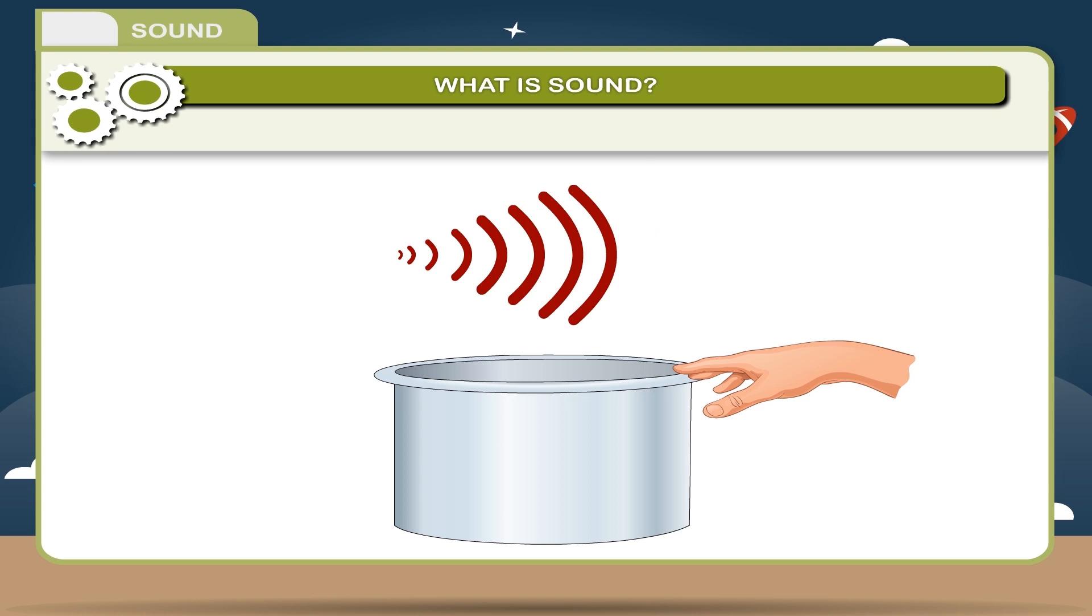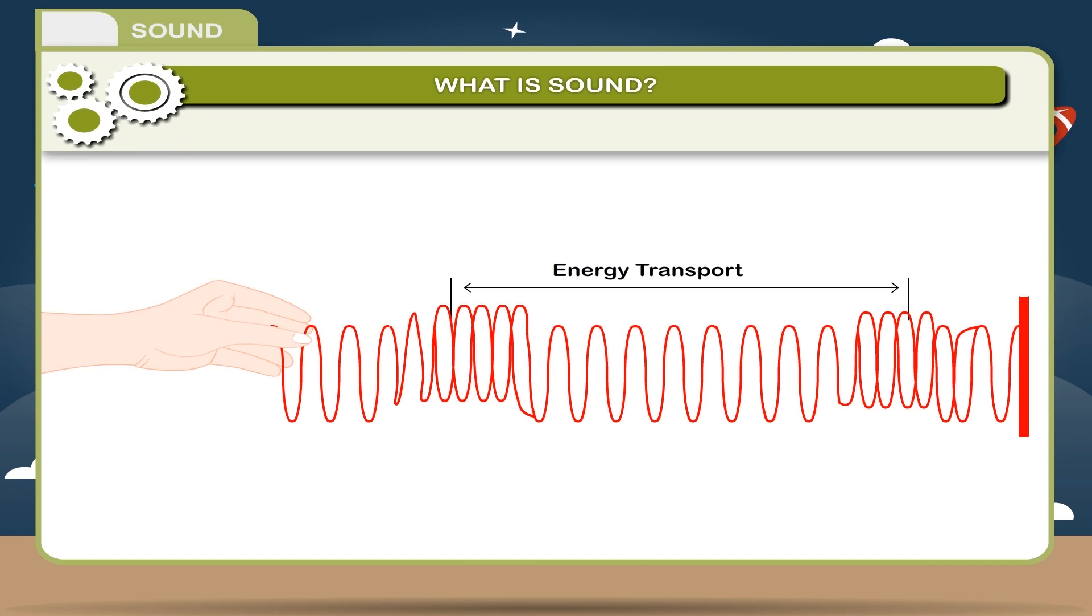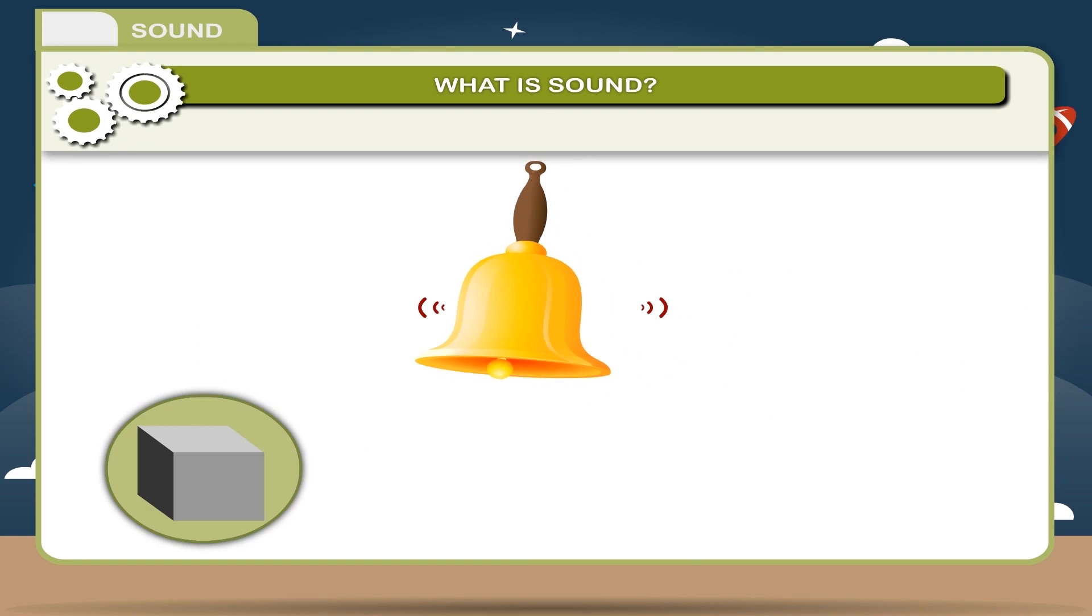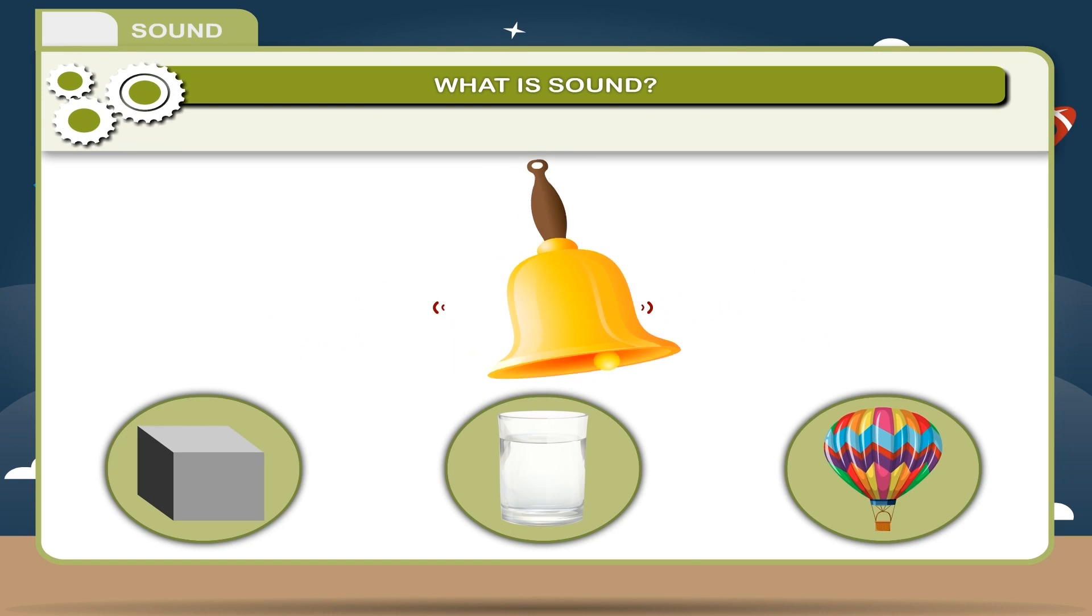These activities show that sound is produced by the vibration of the medium. If the vibrations are stopped, no sound will be produced. Hence, we conclude that sound is a form of energy and this energy is carried away by particles vibrating about their mean position. In this way, sound travels in solids, liquids, and gases.